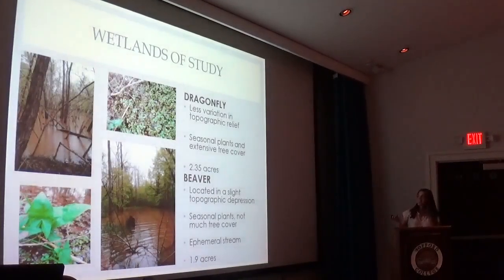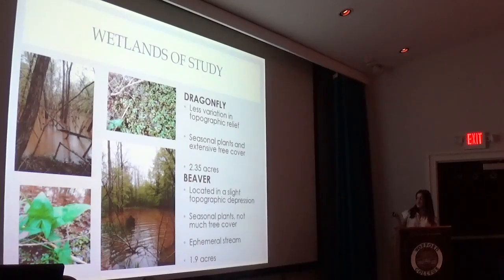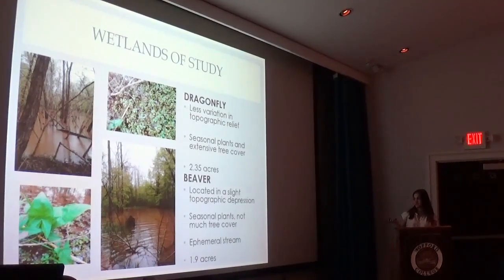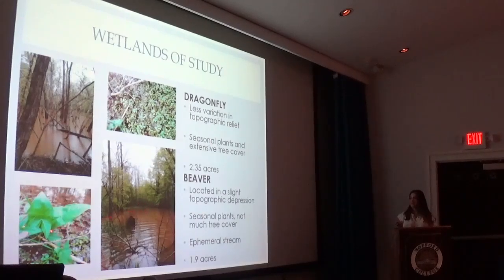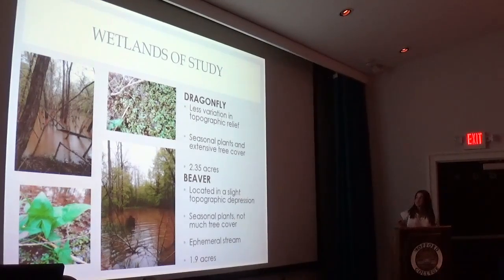My two wetlands of study — I named them for fun. The one closest to the dam, further downstream, is Beaver. It's located in a slight topographic depression, has more seasonal plants and not as much tree cover. As you can see in this picture, it's a more open area with more seasonal plants. Dragonfly, which is upstream, has less variation in topographic relief, less seasonal plants, and more extensive tree cover.